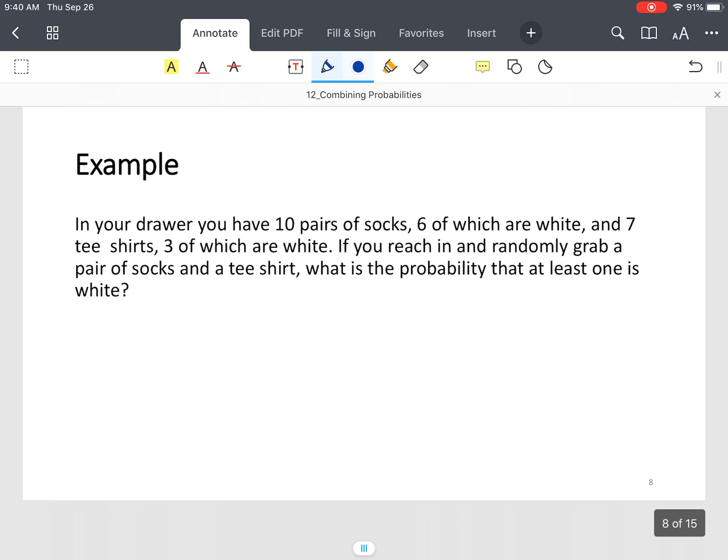So looking at our previous example from two slides back, still have our 10 pair of socks, still have our 7 t-shirts. Now the question in this case is, what is the probability that at least one, either the pair of socks or the t-shirt is white?